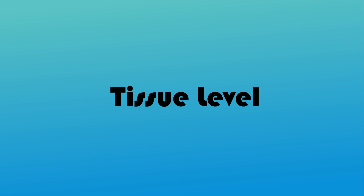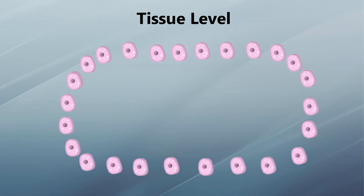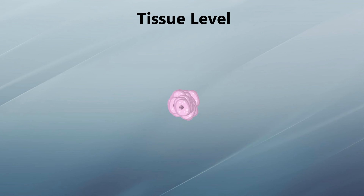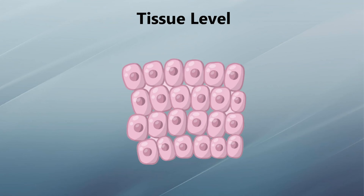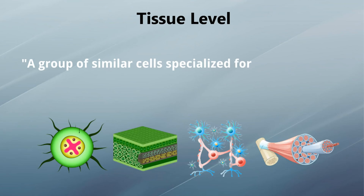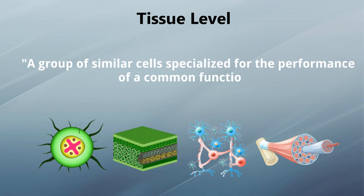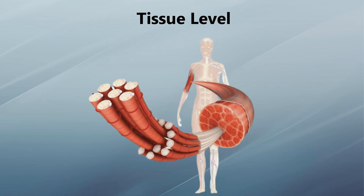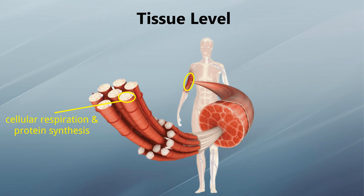At the tissue level, similar cells performing similar functions are organized into groups called tissues. Tissue can be defined as a group of similar cells specialized for the performance of a common function. Each cell in a tissue carries on its own life processes like cellular respiration and protein synthesis, but it also carries on some special processes related to the function of the tissue.